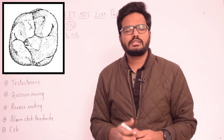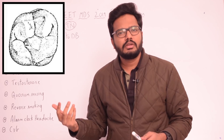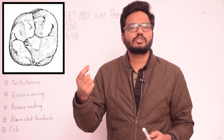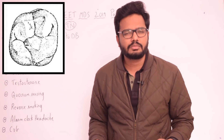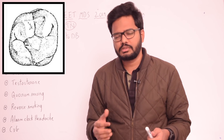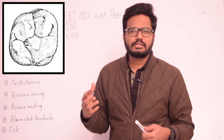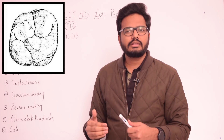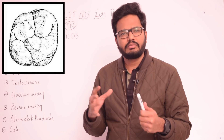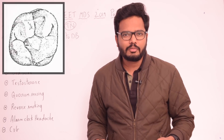The largest cusp is the mesiopalatal, next largest is the mesiobuccal, followed by the distopalatal, and the distobuccal being the smallest cusp in the maxillary first molar — we're talking about functional cusps; the cusp of Carabelli is obviously smaller than all of these. So the oblique ridge extends from the mesiopalatal to the distobuccal cusp. These kinds of questions are easy to remember if you have the image in your mind.